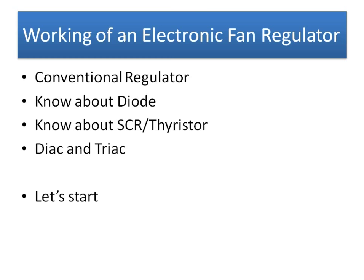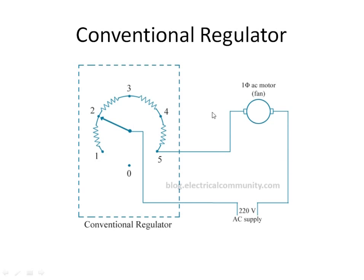This is a conventional fan regulator. The circuit is very simple — a 220 volt AC supply is given and the current begins to flow through an adjustable knob. The old-style regulators were big with a switch that could be controlled. There are series-connected resistances that can be adjusted, so by moving this switch we can adjust the resistance across this single-phase induction motor or fan, and thus adjust the current.